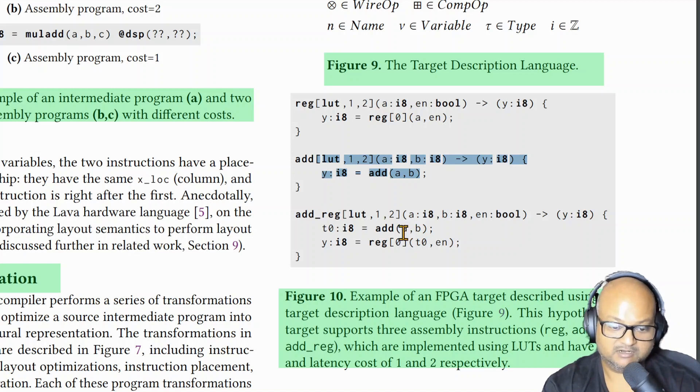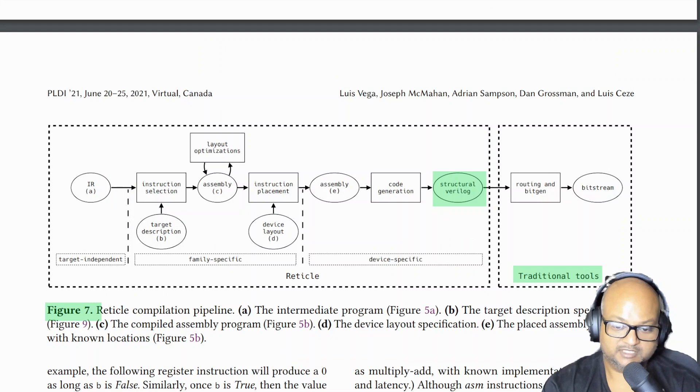And this is what the overall compilation tool chain looks like. We have our target independent and high level intermediate representation which then gets compiled down to a family specific assembly language. And the device specific assembly language goes through a code generation process at the end of which we get very low level structural Verilog, and this structural Verilog can then be passed on to the vendor's tool chain for creating the bitstream that gets burnt onto the FPGA.